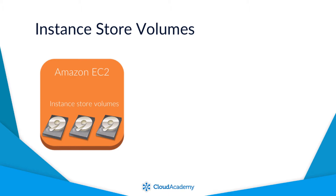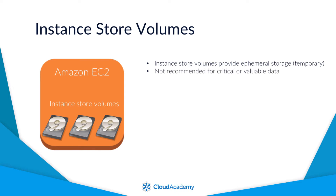Up until now within this course, we have discussed persistent storage options, but instance store volumes provide ephemeral storage for your EC2 instances. Ephemeral storage means that the block level storage it provides offers no means of persistency. Any data stored on these volumes is considered temporary. With this in mind, it is not recommended to store critical or valuable data on these ephemeral instance store volumes, as it could be lost should an event occur.